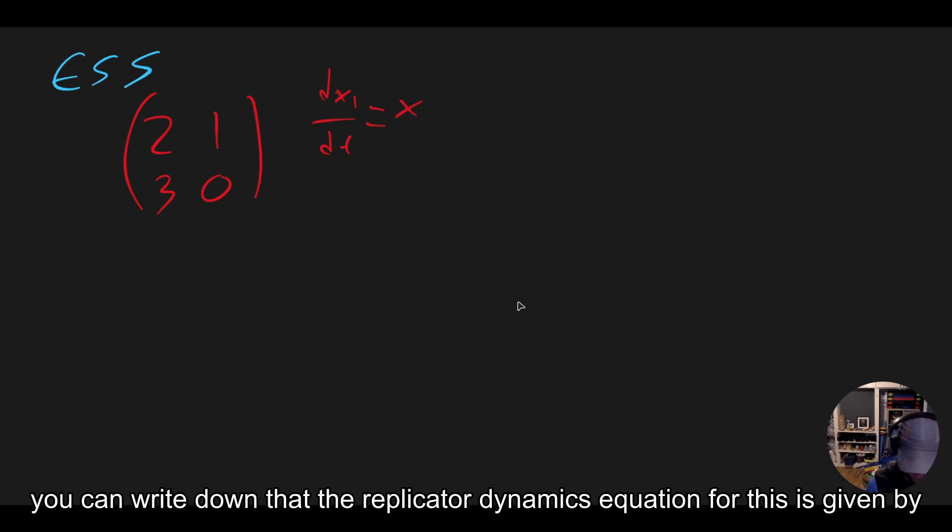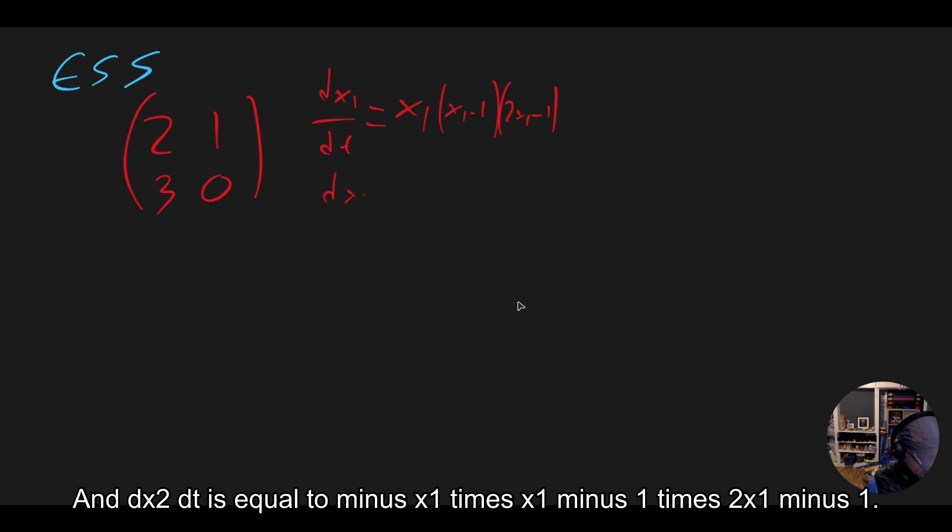you can write down that the replicator dynamics equation for this is given by dx1/dt equals x1 times (x1 minus 1) times (2x1 minus 1). And dx2/dt is equal to minus x1 times (2x1 minus 1).